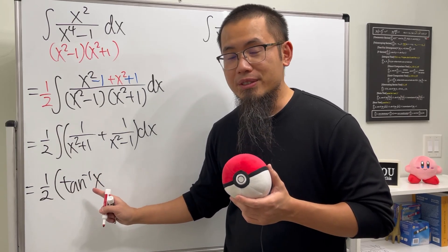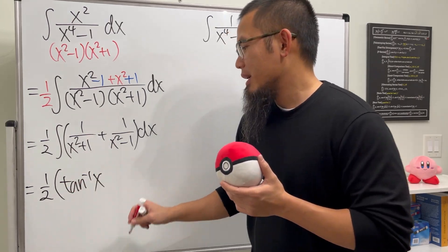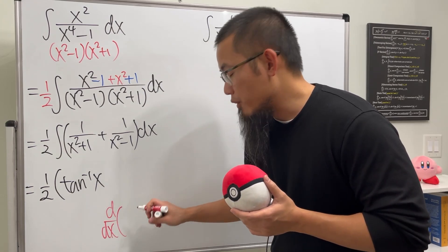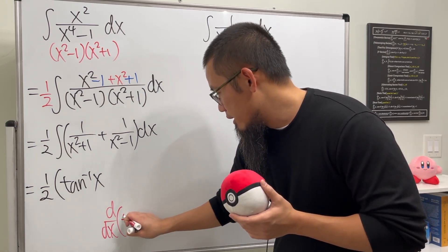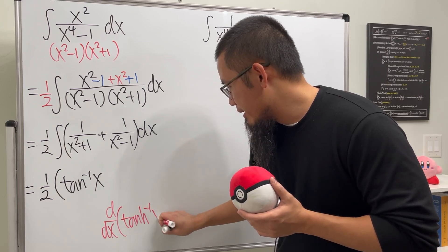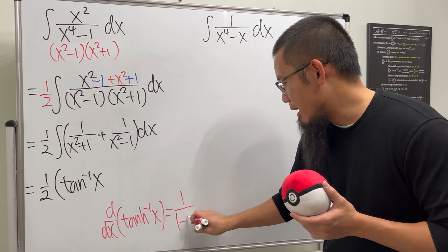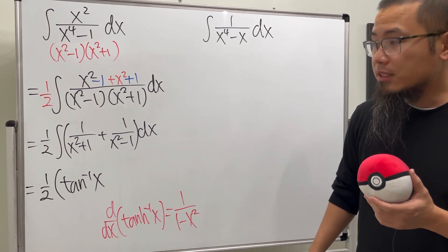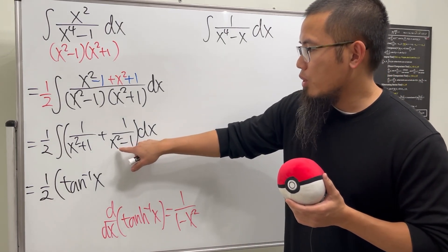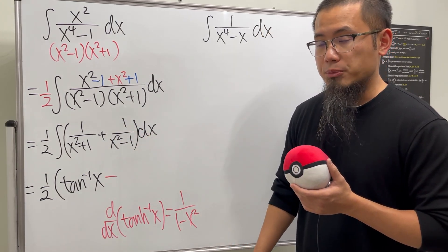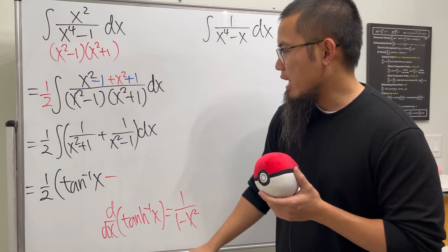This is the inverse original tangent, right? But, if you differentiate the inverse of the hyperbolic tangent, this right here gives you 1 over, unfortunately, it's 1 - x². So, what do we do? Well, this is x² - 1. We can just factor out negative, so that we can just switch the order of subtraction.